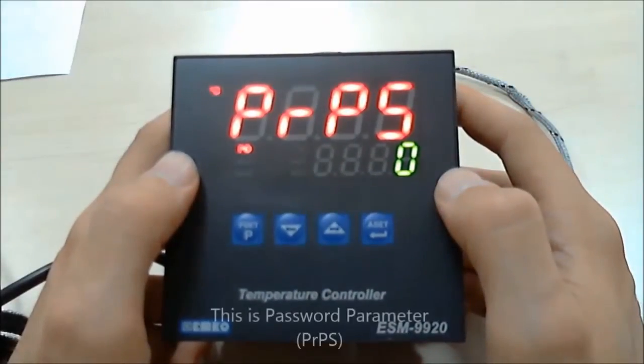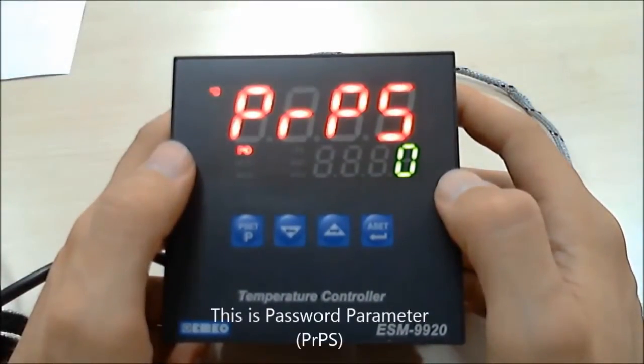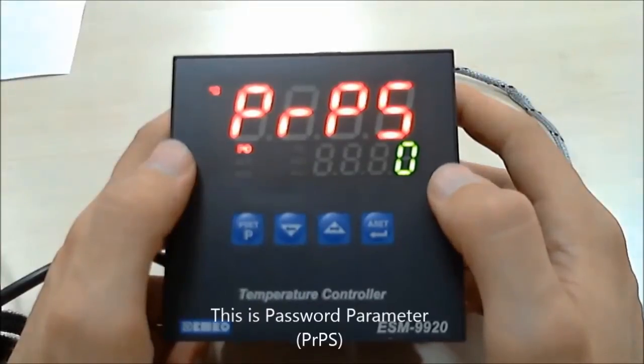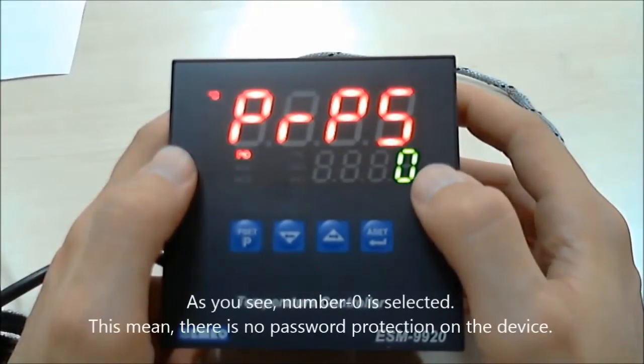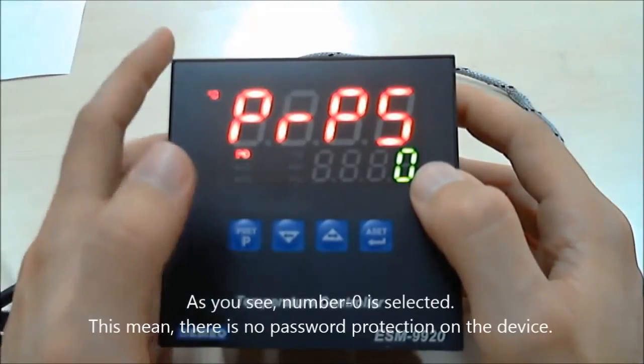We are on the program password parameter now. I selected number 0. This means there is no password now for this device.